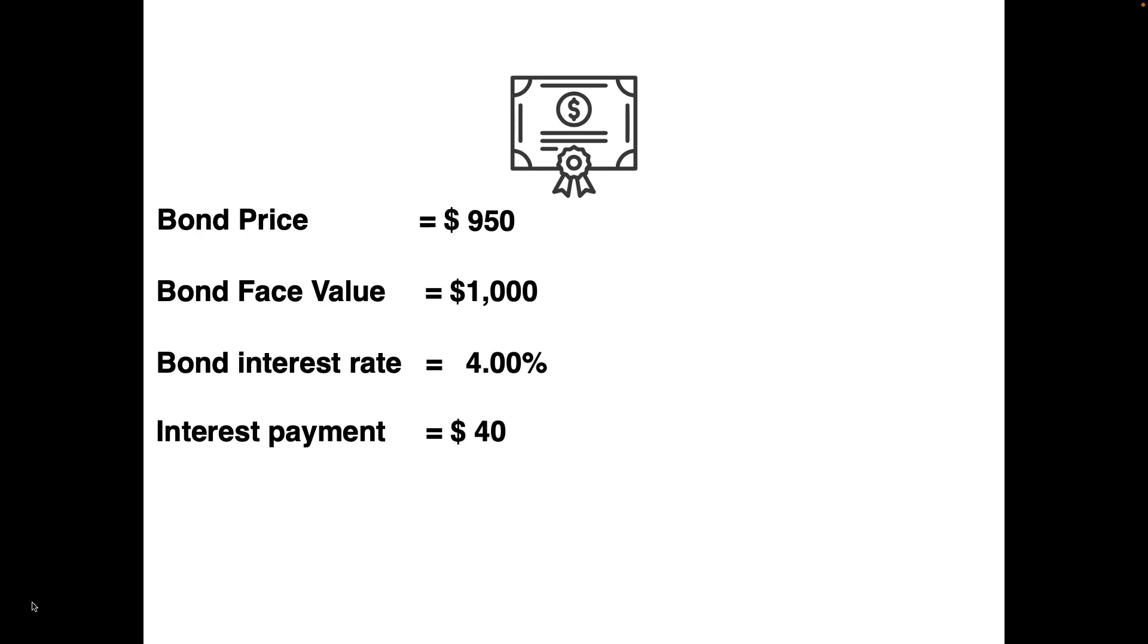At this point, now that you have the price, you can calculate how effective this bond is at providing a return. We call that the yield of the bond, calculated by dividing the interest payment by the bond price. In this case, you receive $40 in interest and paid $950 for the bond, so you're getting a yield of 4.21%.